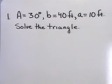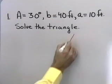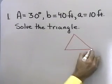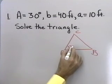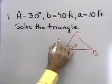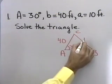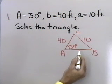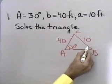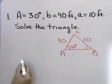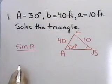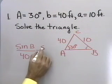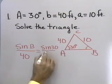Suppose angle A is 30 degrees, side B is 40 feet, and side A is 10 feet. Let's try to solve this triangle. I'll draw a reference triangle and label angle A, B, and C. So angle A is 30 degrees, side B is 40 feet, and side A is 10 feet. Using the Law of Sines, I can solve for angle B, since I have angle A and the side opposite it. The sine of B is to 40, as the sine of 30 is to 10.